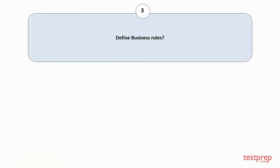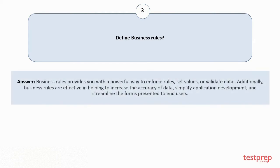Question number 3: Define business rules. Business rules provide you with a powerful way to enforce rules, set values, or validate data. Additionally, business rules are effective in helping to increase the accuracy of data, simplify application development, and streamline the forms presented to end users.